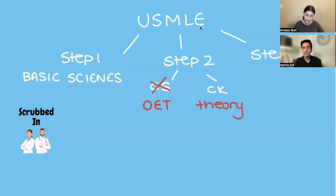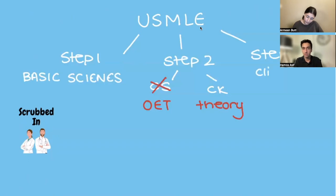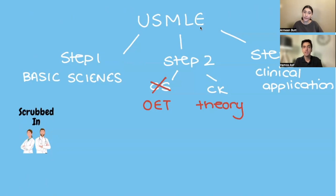Step 3 is similar to Pakistan Medical College's OSPI — you are proving that you are worth working in the USA. Now, one important thing about Step 1 is that it is no longer scored. Before, it was scored, but now when you give Step 1, you either pass or fail. You pass Step 1 if you have more than 196. Step 2, however, is still scored, and you need more than 214 to pass.